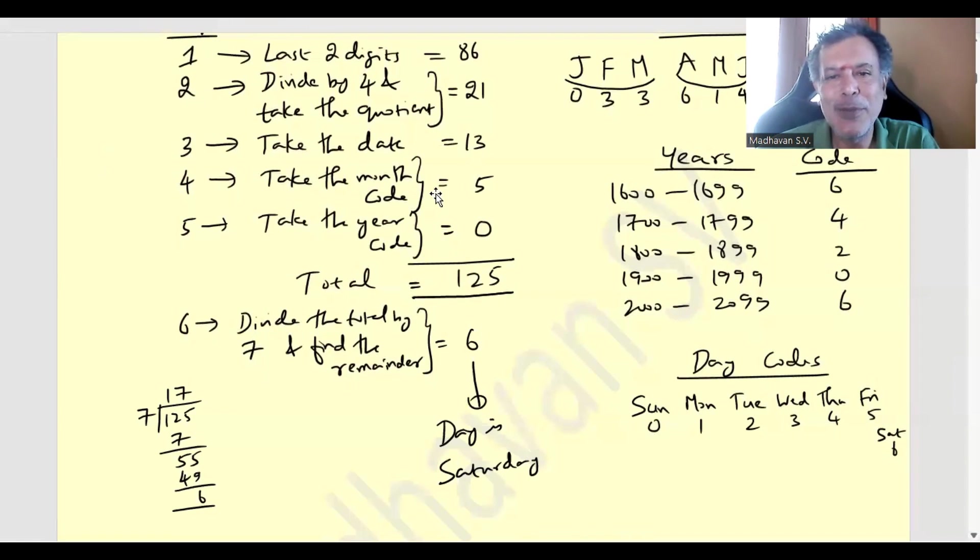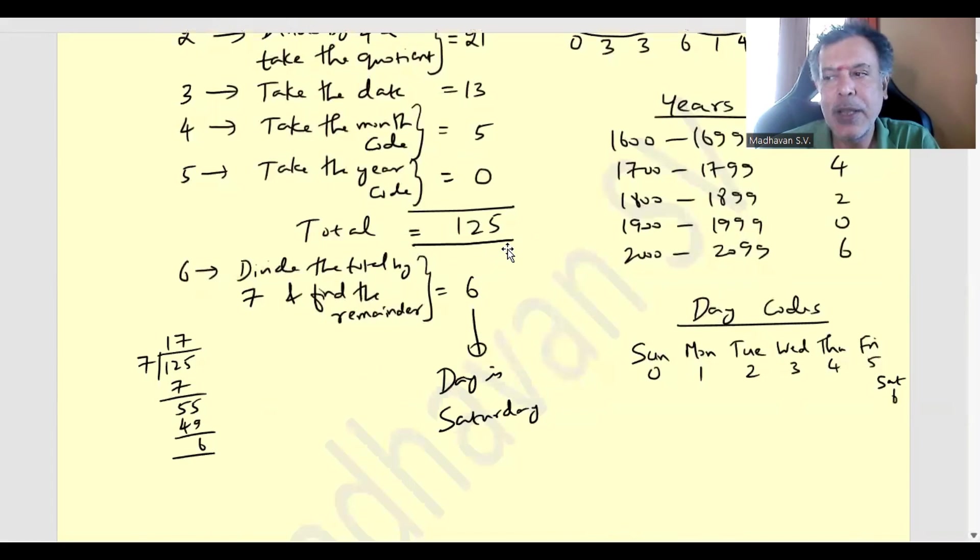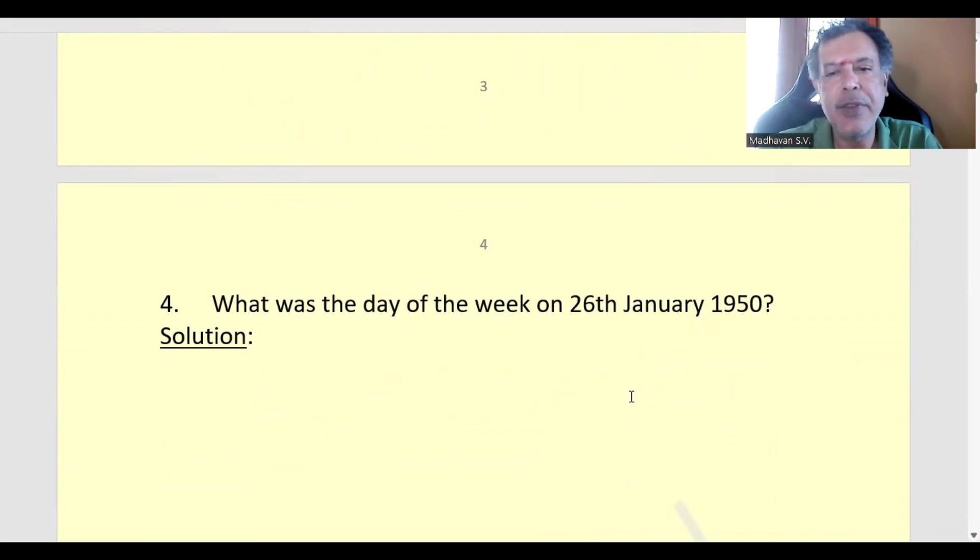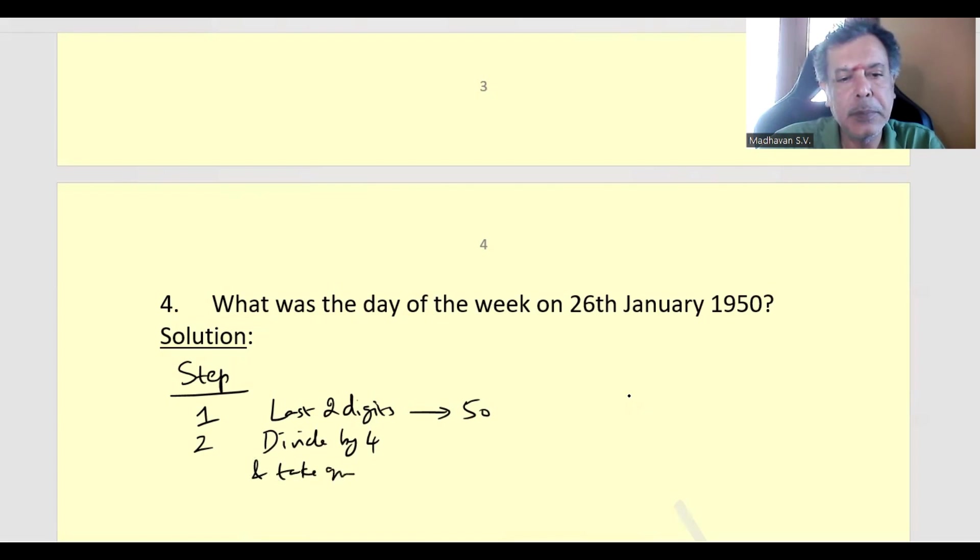That will be the solution for this particular question. Now let us move on to the next question. What was the day of the week on 26th January 1950? So again we are following the same steps. Step 1, last two digits 50, then divide by 4 and take quotient. 4 ones are 4, 4 twos are 8, so it is 12.